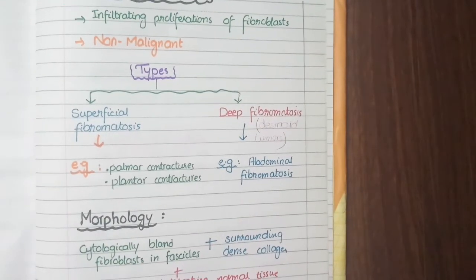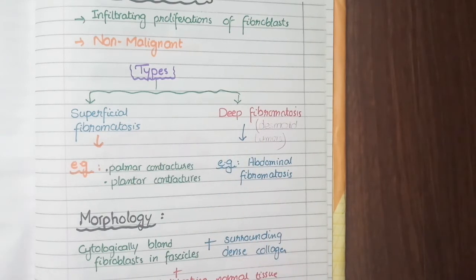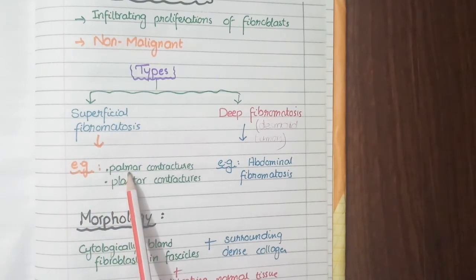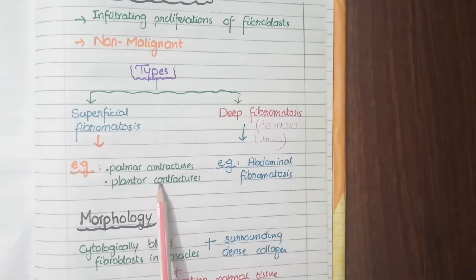Based on their location, they are divided into superficial fibromatosis or deep fibromatosis. Superficial fibromatosis occur in superficial fascias or superficial tissues. Examples include palmar contractures that develop in palms of hands and plantar contractures that develop in the plantar surface of feet.